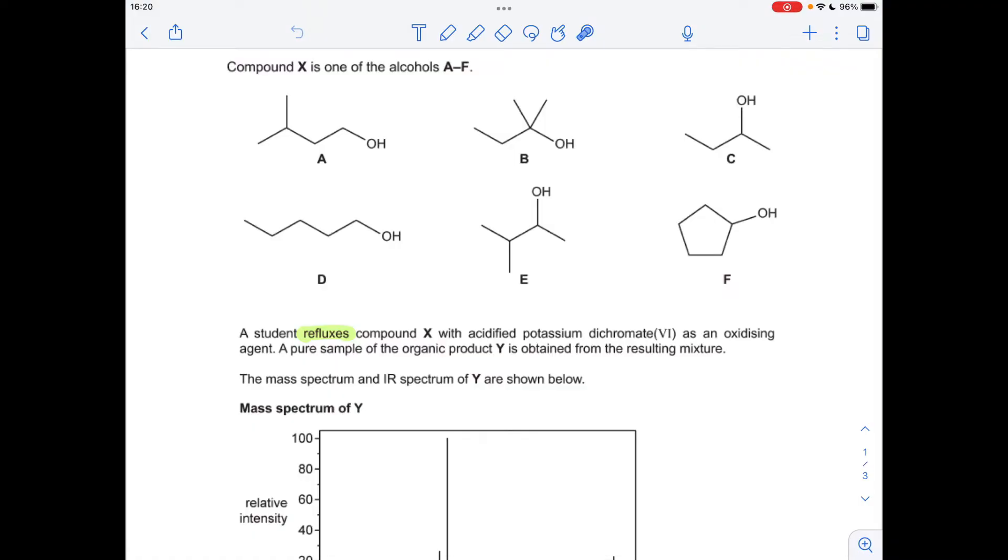So we've got six alcohols to choose from. Compound X is one of them and we're told that the student refluxes the alcohol with acidified potassium dichromate 6, which is obviously an oxidizing agent. So all of these alcohols potentially are going to be oxidized.